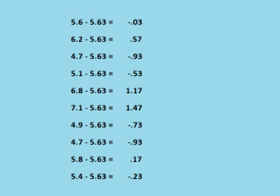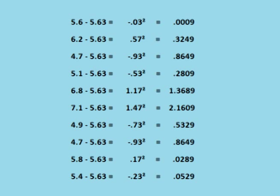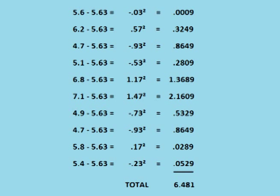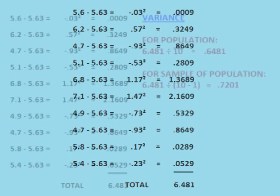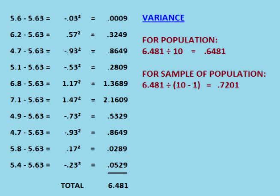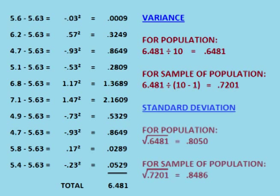We then subtract that mean of 5.63 from each data point. We square each of the answers. We add the squared answers together to get the total squared distance from the mean. We then divide the total squared distance from the mean by either the number of data points or the number of data points minus one to get the variance. We take the square root of the variance to get the standard deviation.